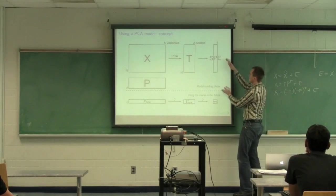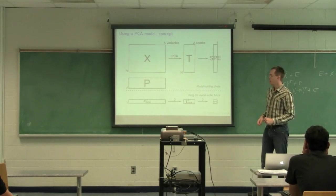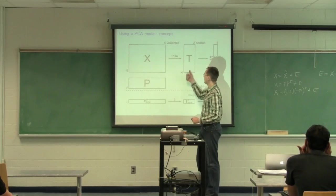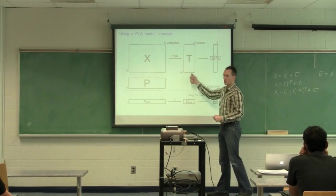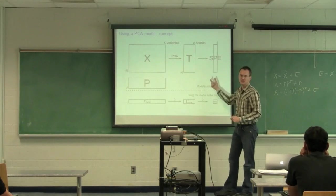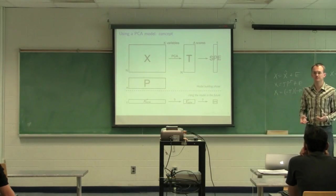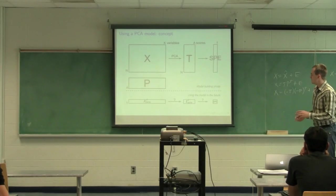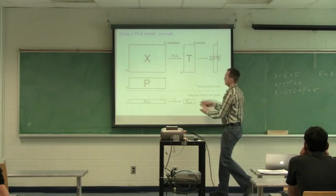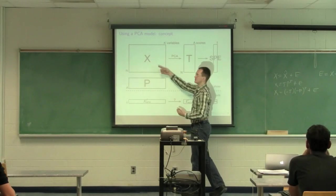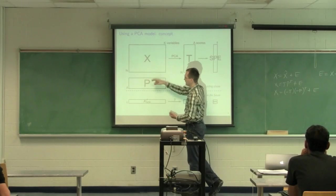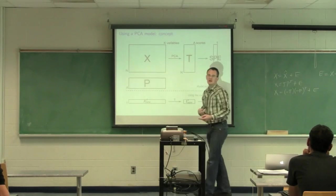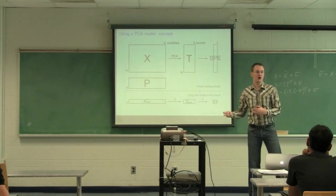Now the question we're asking is, in the future, I want to bring in a new vector x_new. And I want to calculate that vector x_new in scores and that view points SPE values. How do I do that? The reason why we're looking at this is because we're going to want to use this model in the future for monitoring our process or for understanding what's going on. But when we build this model, we don't have this vector available. x_new becomes available in the future after we've built the model.